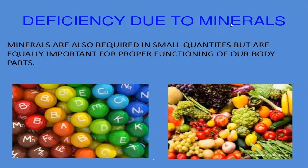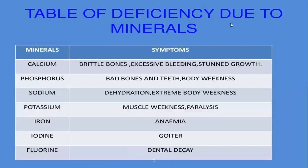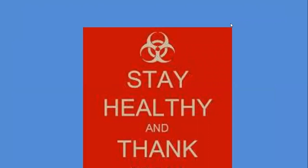Minerals are also required in very small quantities but they are equally important for the functioning of our body. A few minerals that must be included in our diet are calcium, phosphorus, sodium, potassium, iron, iodine, and fluorine. Their deficiency can also cause diseases — for example, deficiency of iron causes anemia, and deficiency of iodine causes the disease goiter. So we need to include vitamins and minerals in our diet to stay away from all these deficiency diseases.